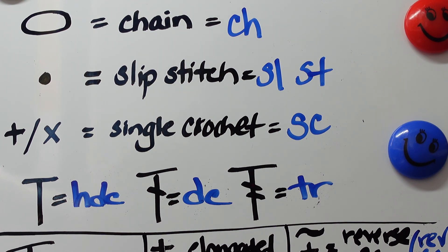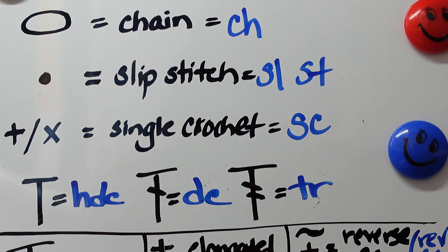Now we move on to the half double crochet — it's just the T symbol. Then the double crochet is the T with one slash. The way you can remember that is: you yarn over once before you go into the stitch for the double crochet. That takes us to the treble crochet — you yarn over twice before entering the stitch — so when you see a T with two slashes, that's the treble crochet.